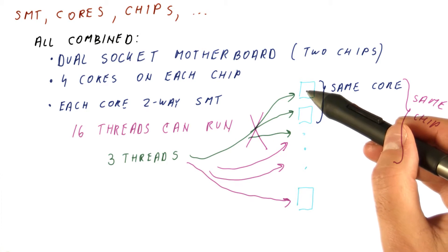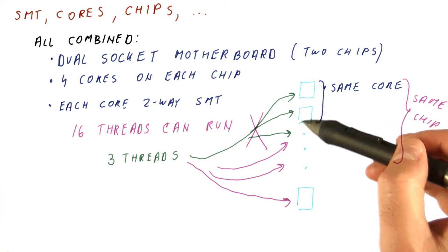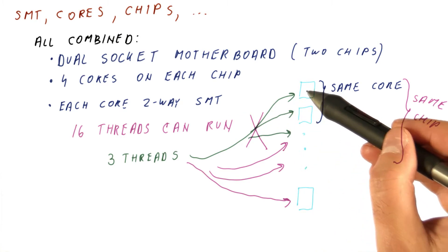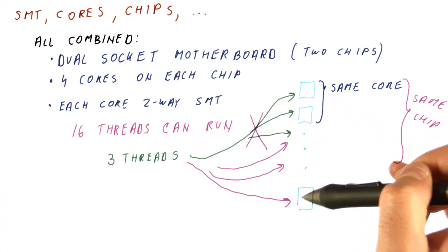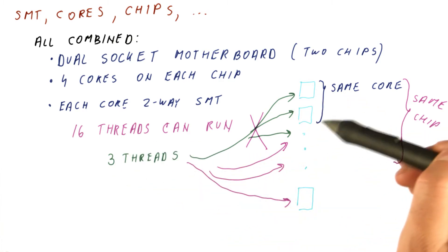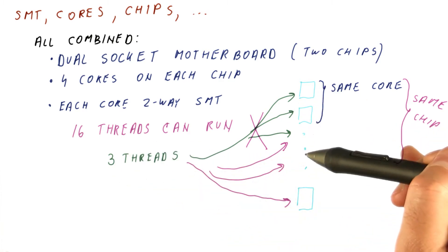Then, we also want to make sure that we first map a thread to each core, and only then do we want to actually map threads to the second thread in each core. So that if there are fewer threads, they don't need to share the resources of the same core. Each gets its own core.